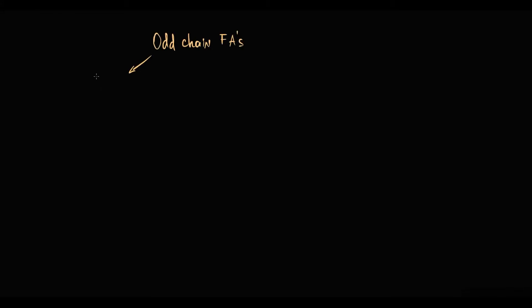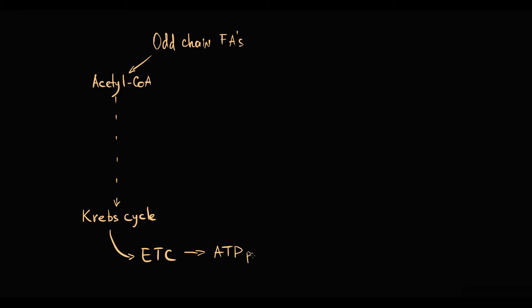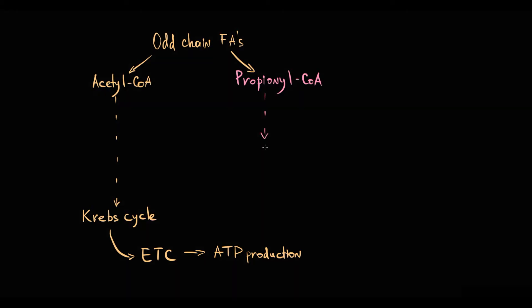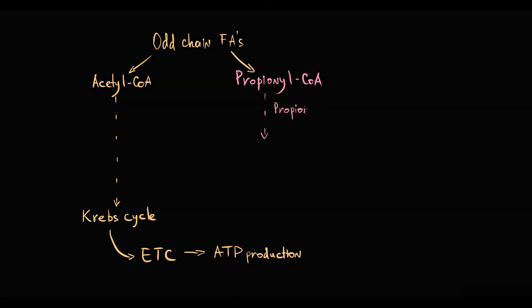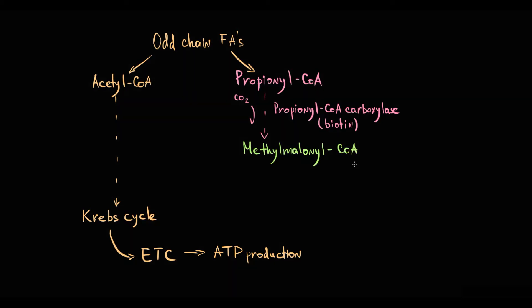The final products of odd-chain fatty acid beta-oxidation are acetyl-CoA, which goes into the Krebs cycle and electron transport chain resulting in energy production, and propionyl-CoA. Propionyl-CoA has to be degraded, and the first step is catalyzed by propionyl-CoA carboxylase, which uses biotin as a coenzyme, and by adding CO2 it produces methylmalonyl-CoA.